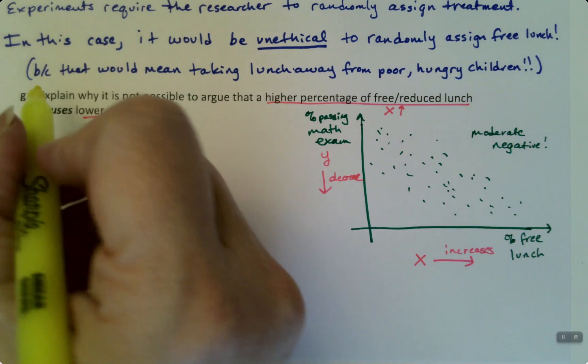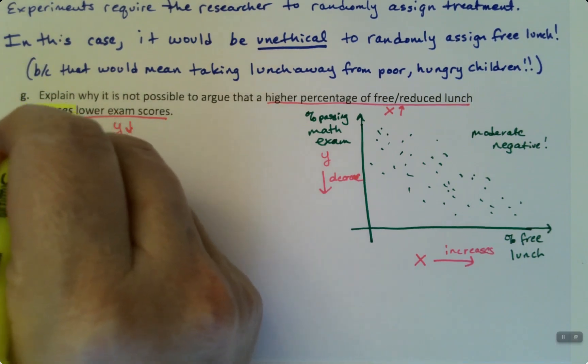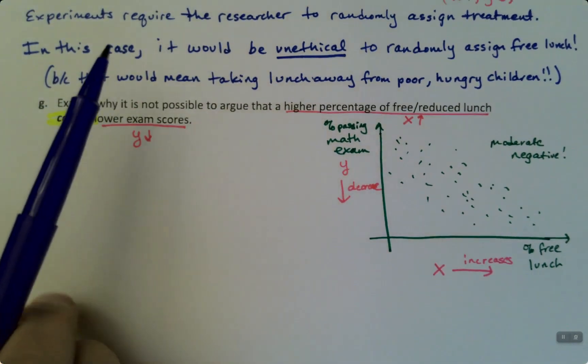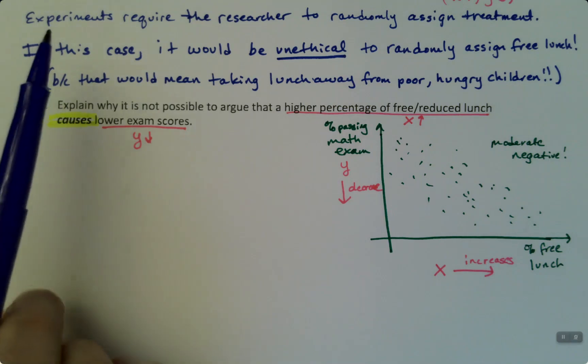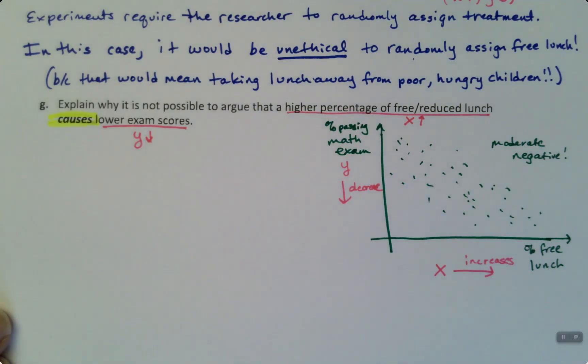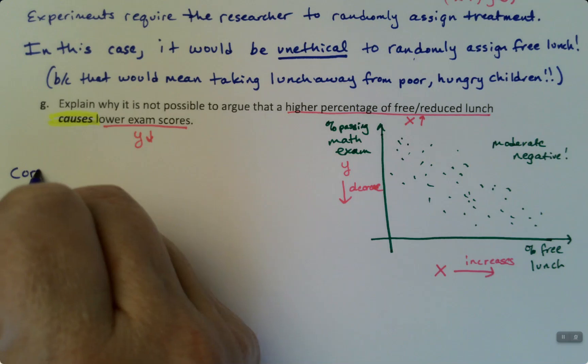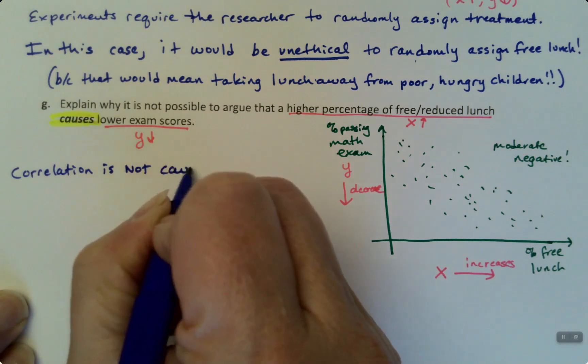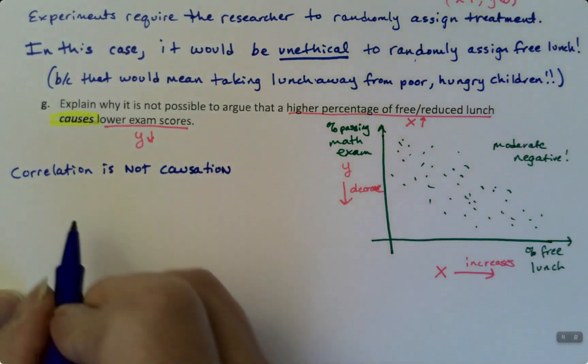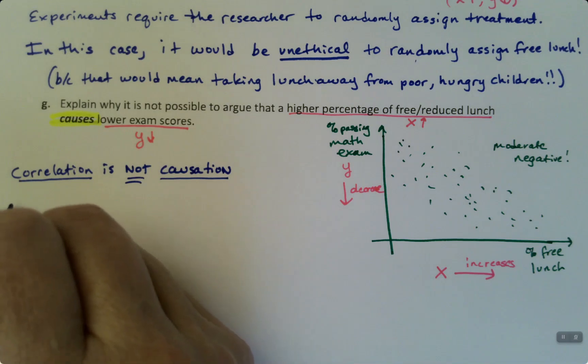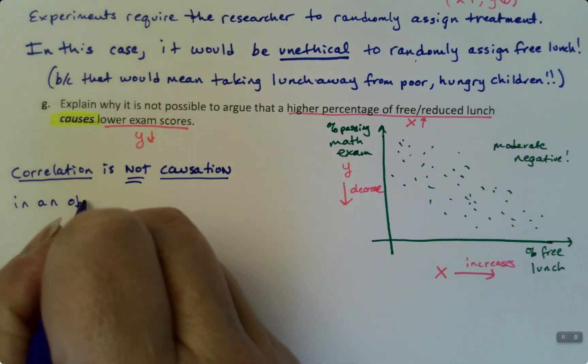Even though we see that, and it is a moderate negative relationship with a good correlation here, it's not possible to argue that it causes the lower exam scores. This is leading us to a very important topic, and the key is this word: causes. Causation is very hard to do because causation requires an experiment. You can't prove causation unless you can randomly assign the treatment, but you can't randomly assign this treatment because it would be unethical. Correlation, you've probably heard this phrase in maybe a science class, is not causation. We see a relationship, and this is a real relationship with real data, so correlation is not causation in an observational study.